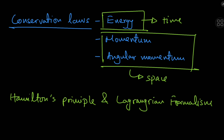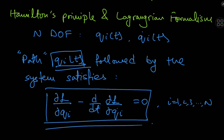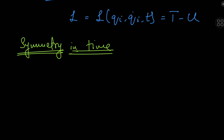To understand how these symmetries give rise to conservation theorems, we need Hamilton's principle and the Lagrangian formalism covered in the last video. For a system with n degrees of freedom, we defined a system of generalized coordinates qᵢ(t), where i varies from 1 to n, and a corresponding set of generalized velocities q̇ᵢ(t). We proved that the path qᵢ(t) followed by a system satisfies a system of differential equations, where the Lagrangian L is defined as a function of the generalized coordinates, generalized velocities, and time — as the difference between total kinetic energy and total potential energy.